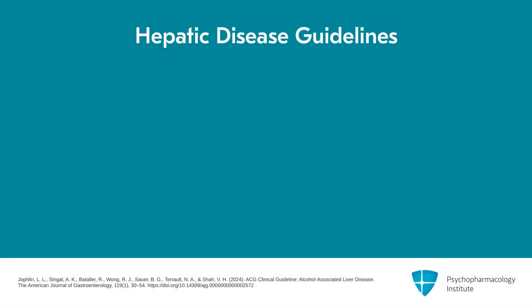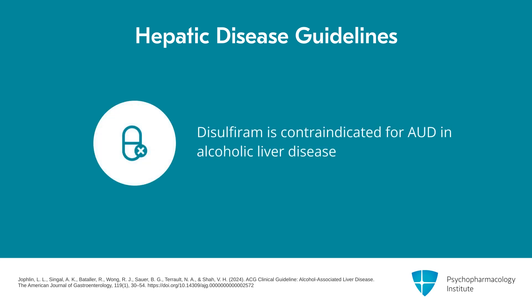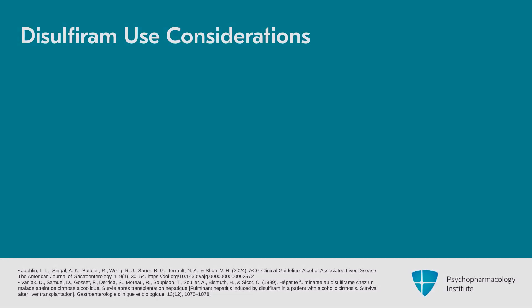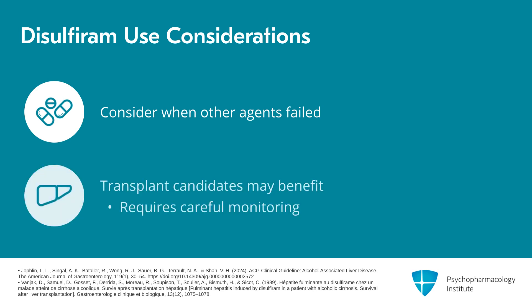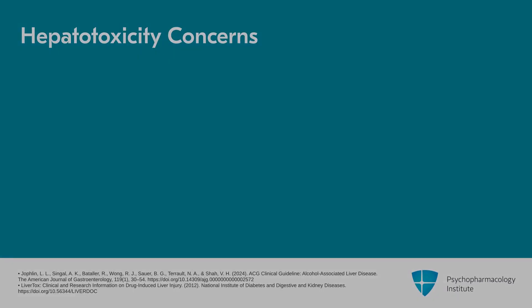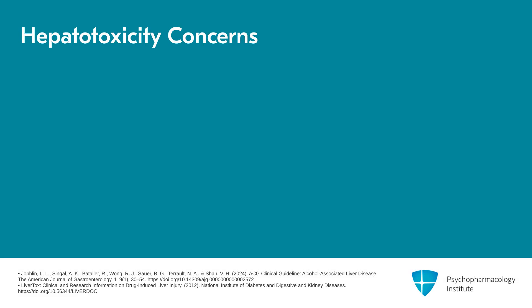Hepatic disease is quite important to consider with disulfiram. The American College of Gastroenterology Guidelines states — and I quote — disulfiram should not be used in the treatment of alcohol use disorder along any spectrum of alcoholic liver disease. They note this is a conditional recommendation with a very low level of evidence. However, if everything else has failed — naltrexone, acamprosate, other agents along with behavioral treatments — but there is evidence disulfiram has worked in the past, or the patient cannot get a liver transplant unless they show six months of abstinence, then with very careful monitoring you might consider using this agent. Nonetheless, be aware of the American College of Gastroenterology guideline against its use.